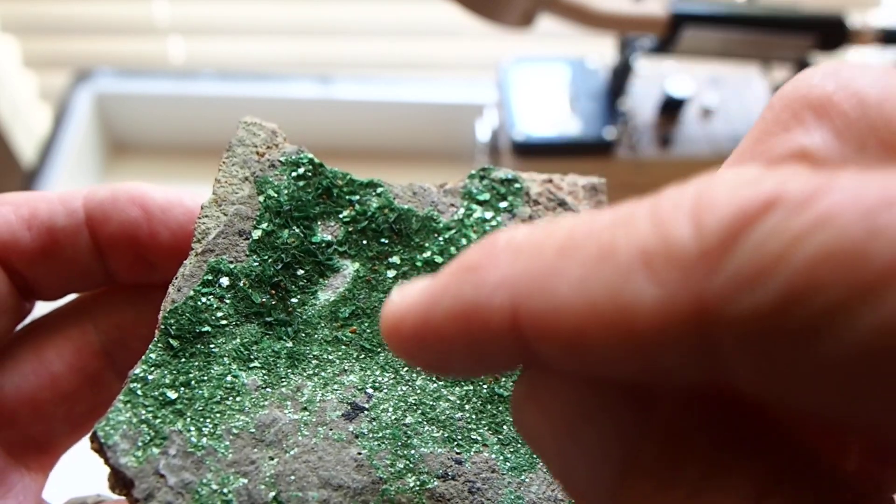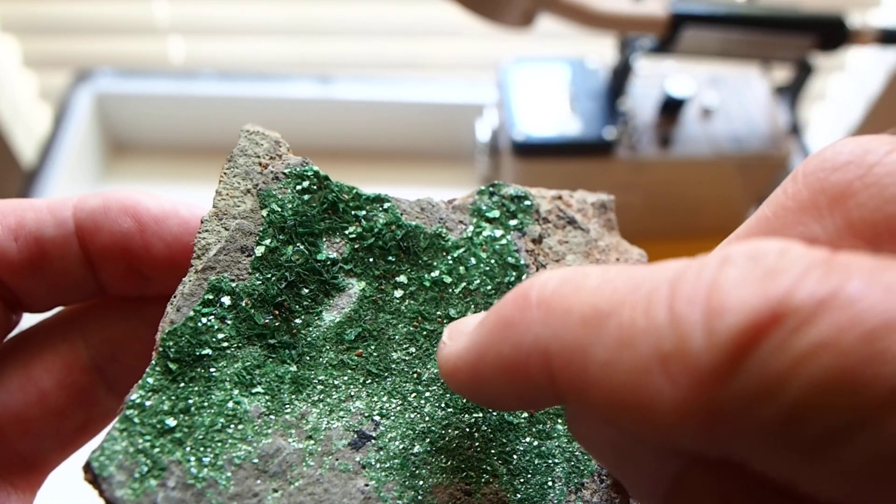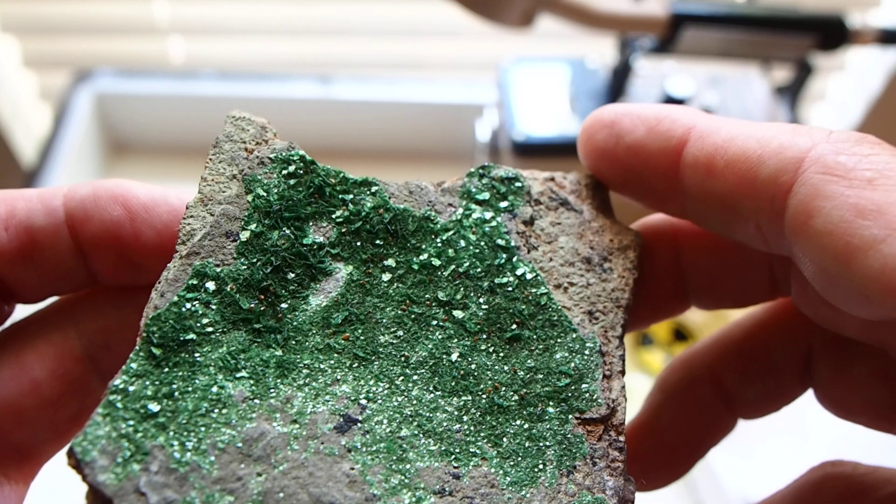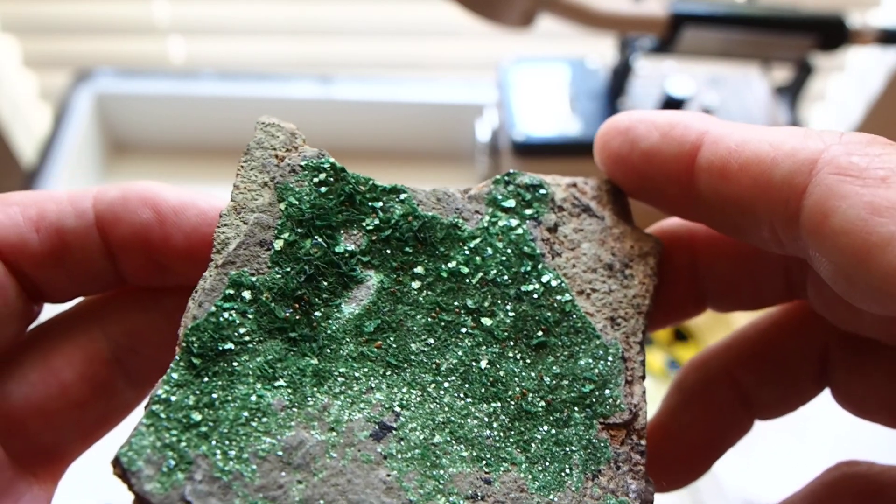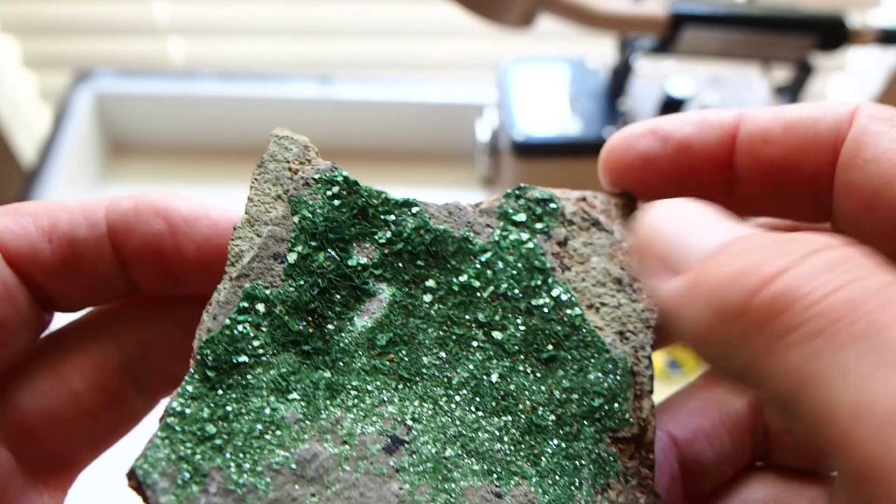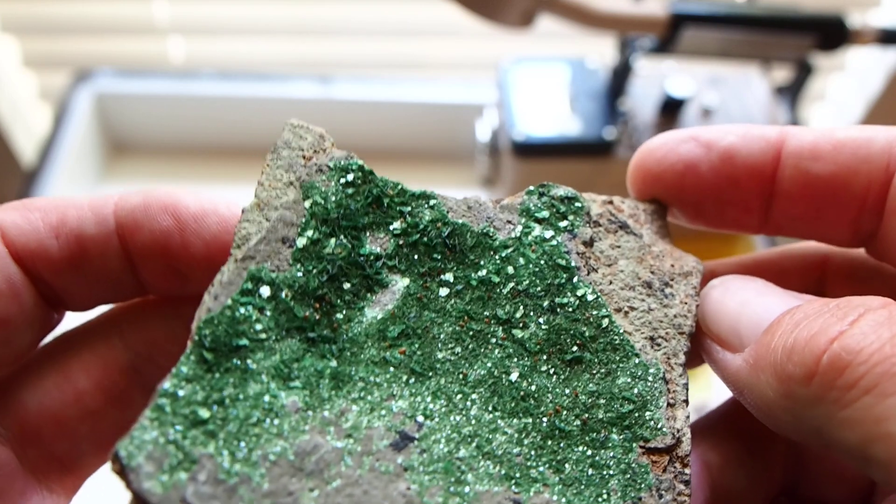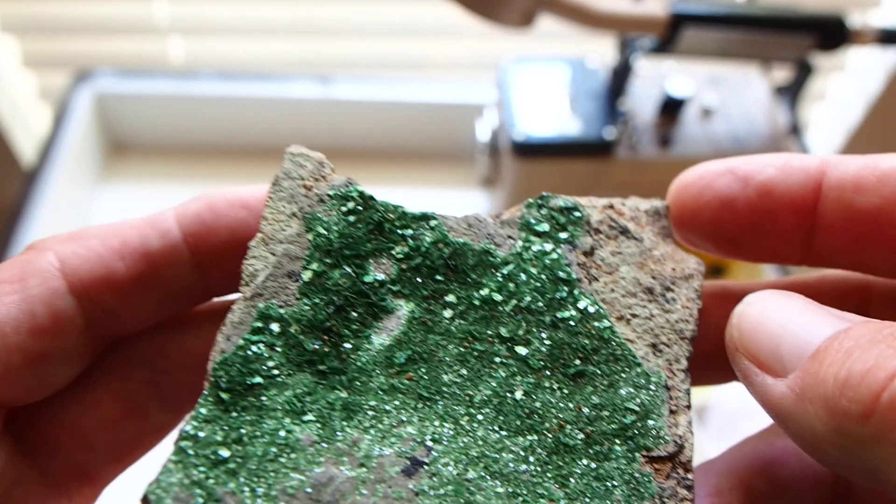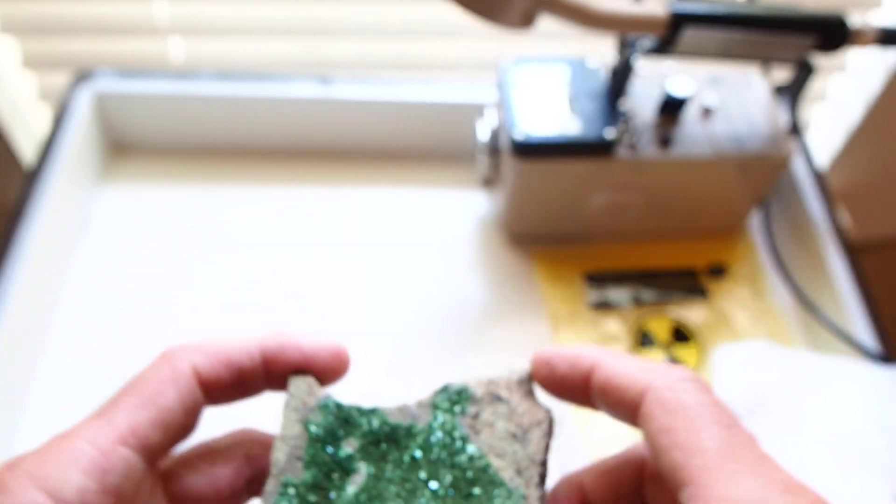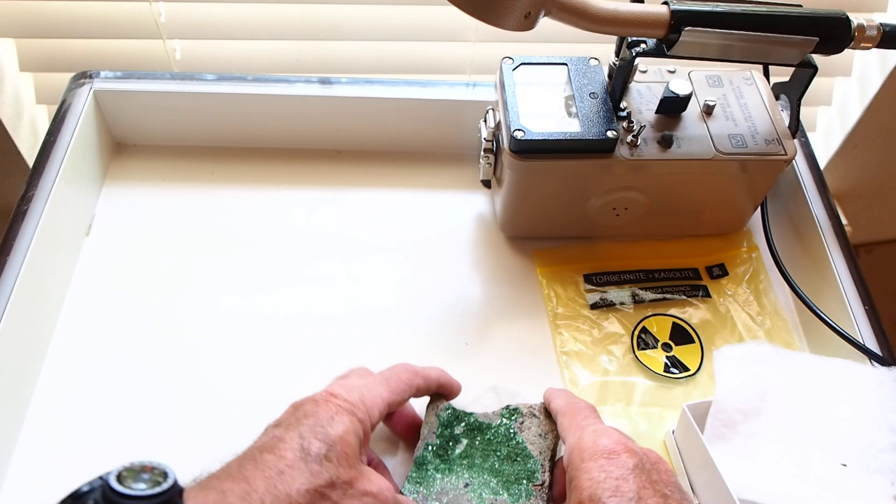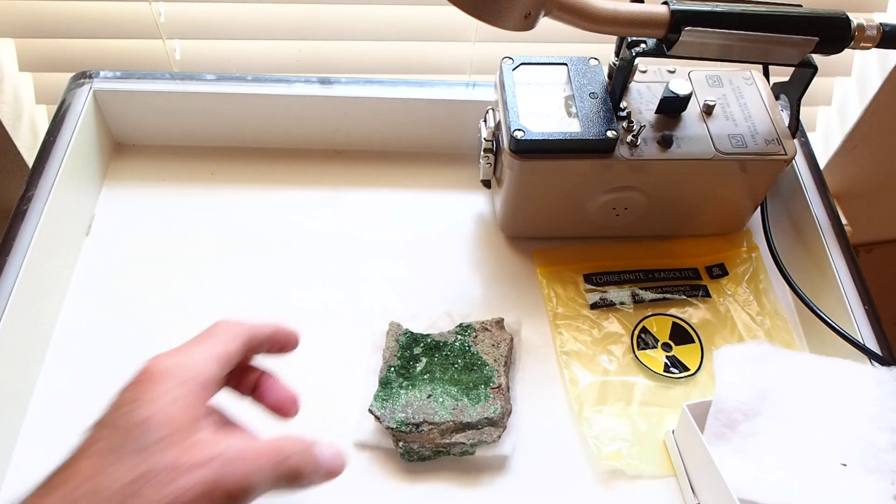See the Kisalite crystals, the little, tiny little orange crystals there. And of course the Torbenite, bright green. That's it for that specimen. Thank you for watching.